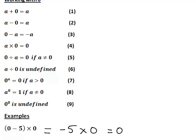Let's have a look at a couple more properties of 0. Property 5: 0 divided by any non-zero number is 0. And property 6: any number divided by 0 is undefined.